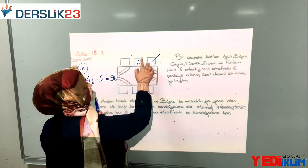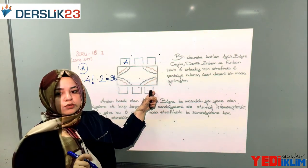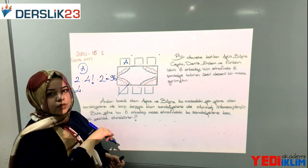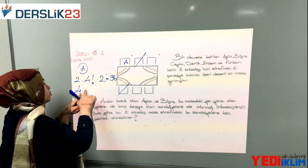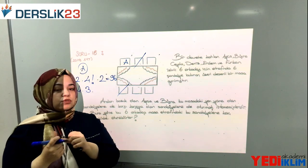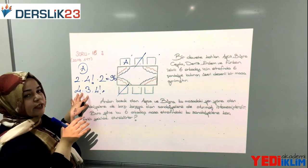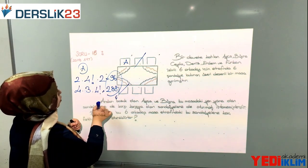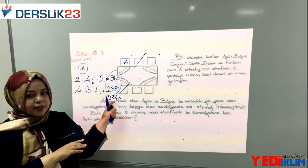Şimdi Ayça ortada oturmasın, köşelerden birine oturalım. 4 tane köşe var. Ayça köşedeyse Büşra karşısında ve yanında oturamaz; Büşra için 3 farklı sandalye kalır. Ayça ve Büşra yerleşince geriye 4 arkadaş, 4! = 24 şekilde oturur. 4 köşe × 3 × 24 = 288. Toplamları: 96 + 288 = 384.